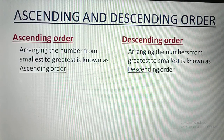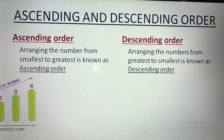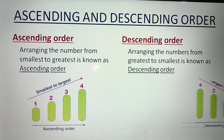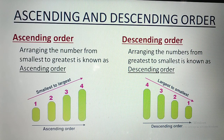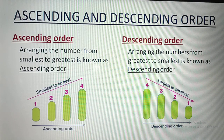Now, ascending and descending order. Ascending order mein hum sankhyaon ko chote kram se bade ki taraf lagate hain. Arranging numbers from smallest to greatest is known as ascending order — choti sankhya pehle, phir usse badi, phir usse badi, and so on.